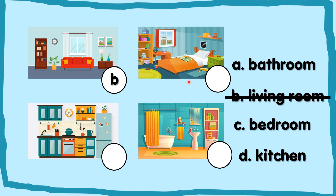Next. What room is this? We sleep here. Yes, it's a bedroom. Which one is bedroom — A, C or D? You found it. Bedroom. It's C. You write C over here.